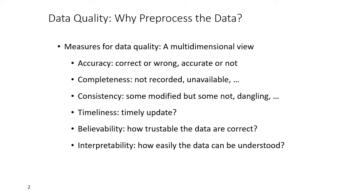Now let's talk about data quality from a multi-dimensional view. First is accuracy — whether the data in the dataset is correct or accurate enough to draw inferences. Then we have completeness — whether all data is correctly recorded, all fields are present, or if some fields are missing. Then consistency — when we have multiple files and some have modifications while others don't, identifying which value is correct becomes an issue.